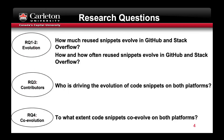The research questions are categorized into three classes. First is evolution, which includes the first two RQs that answer how much and how often the snippets on these platforms evolve. Second category is who drives the evolution on both platforms. Third category is co-evolution: to what extent do the snippets co-evolve on both platforms?